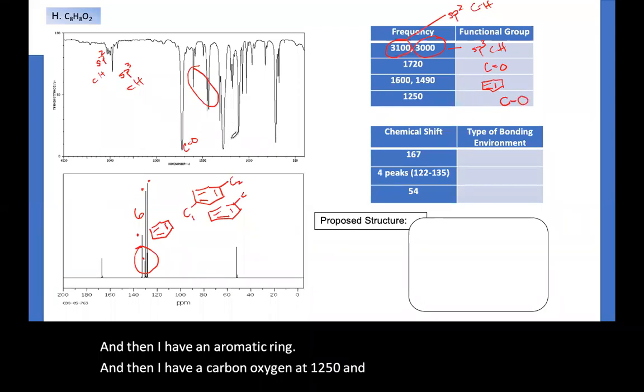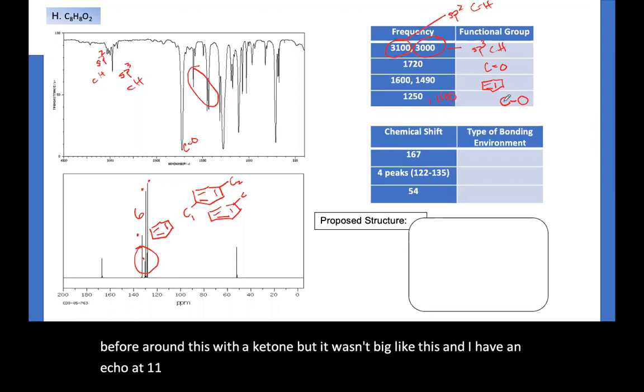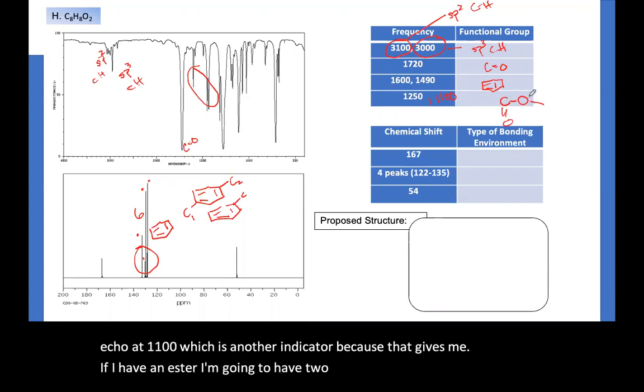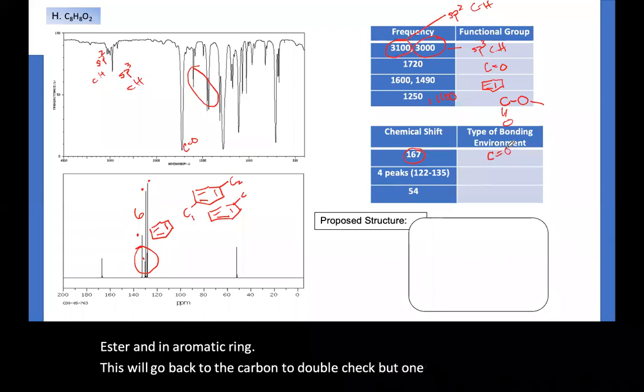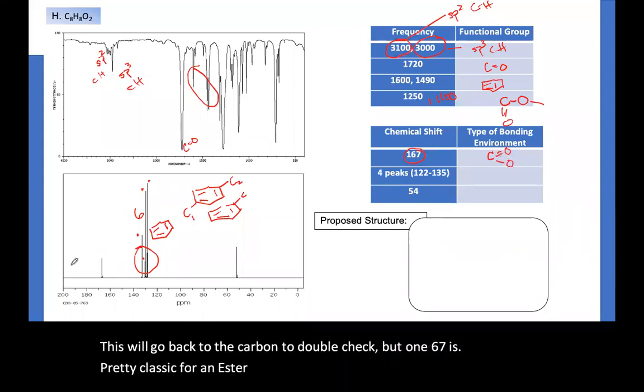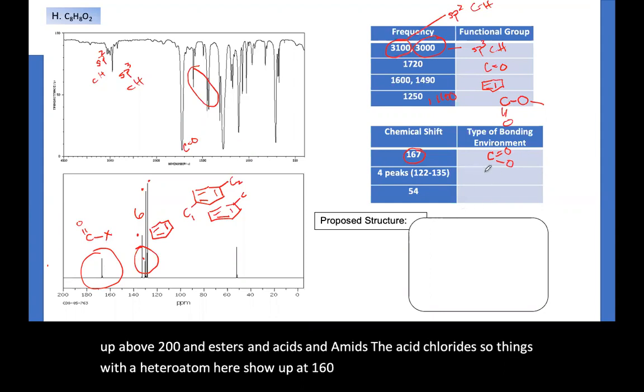And then I have a carbon oxygen at 1250. Now notice we saw something before around this with a ketone, but it wasn't big like this. And I have an echo at 1100, which is another indicator because that gives me, if I have an ester, I'm going to have two different CO stretches, the SP2 to carbon oxygen and the SP3 to carbon oxygen. So it looks like I have an ester and an aromatic ring. This will go back to the carbon to double check, but 167 is pretty classic for an ester shift. Remember ketones and aldehyde showed up above 200 and esters and acids and amides, the acid chlorides. So things with a hetero atom here show up at 165, somewhere between 160 and 180.